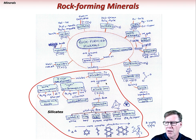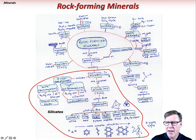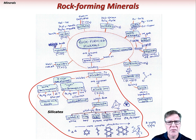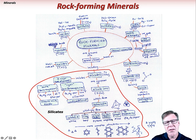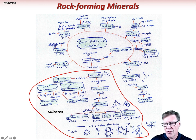The silicates include, on the simple structural end, olivine. They get more complex, forming chains, double chains, sheets, and even three-dimensional framework structures — which is what quartz and feldspar are. You go from more simple to more complex silicate structures. Certain kinds of silicate minerals are dark minerals because they have more iron, magnesium, and calcium, and they are most abundant in the mantle and oceanic crust.